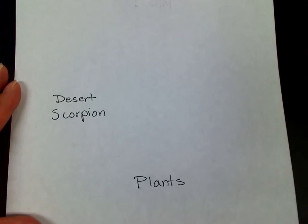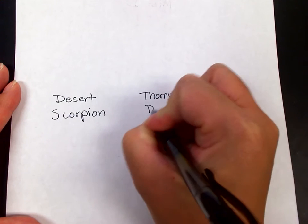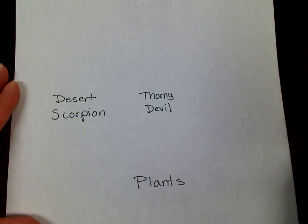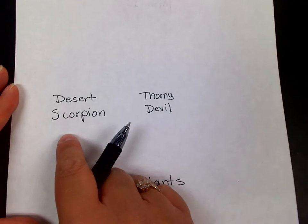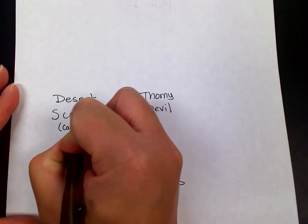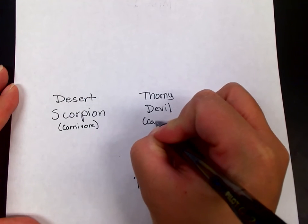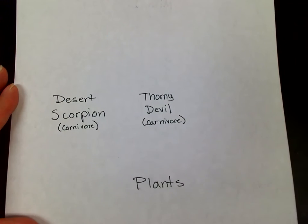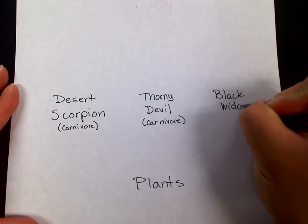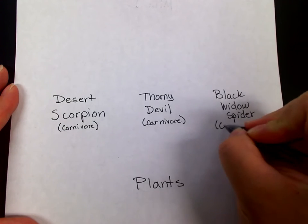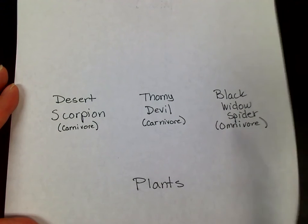Another organism found in the desert is lizards. I had to research what kind of lizards were in the desert, and there's one called the thorny devil — so I have a very specific species. The desert scorpion is considered a carnivore. The thorny devil is also considered a carnivore. I also found a black widow spider in the desert, and that one is an omnivore — so there's three organisms right there.